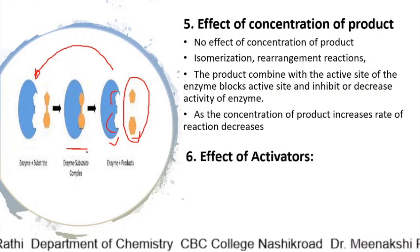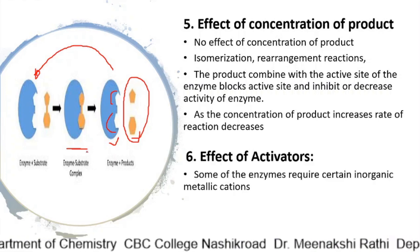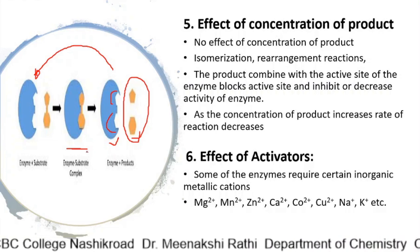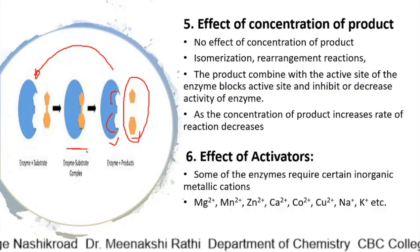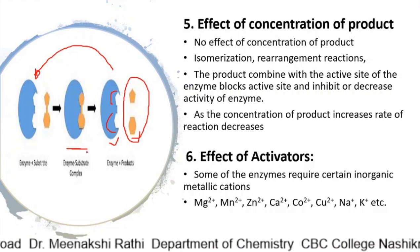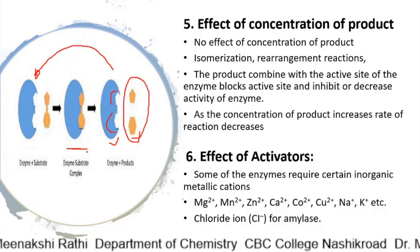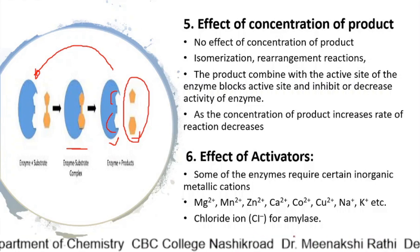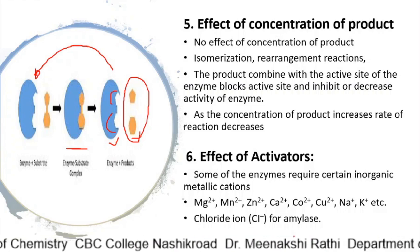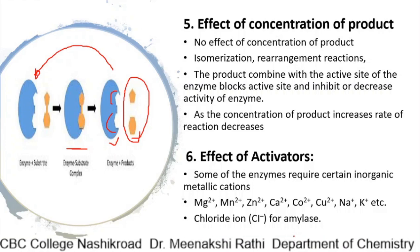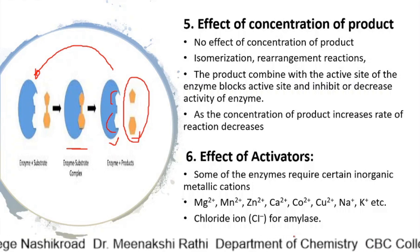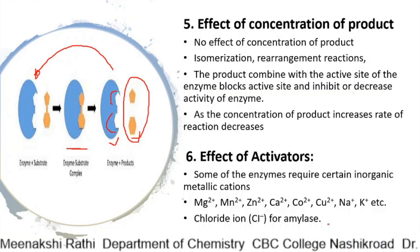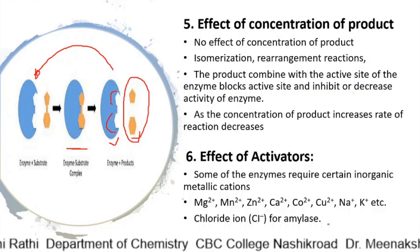Another factor is the effect of activators. Some enzymes require certain inorganic metallic cations like Mg2+, Mn2+, Zn2+, Ca2+, etc. for their optimum activity. Rarely, anions are also needed — for example, chloride ion is required for amylase. These metals function as activators for enzyme velocity, and such enzymes are called metalloenzymes — enzymes which require metals for their activity.